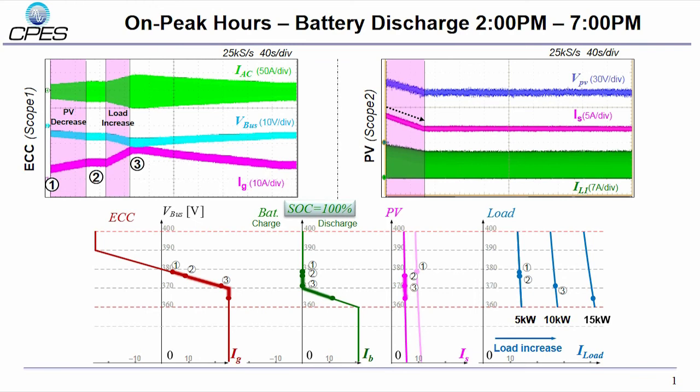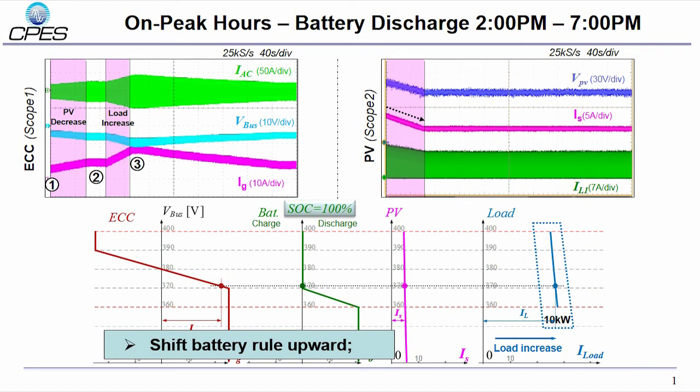If the load is increasing, as you can see here, the ECC will go into the current limiting mode and the bus voltage will be regulated by battery converters. In these conditions, for major heavy load conditions, the load will be majorly contributed by ECC converters. How can we discharge the battery? We can shift the battery's roles upward and the new equilibrium point will be found shown in the solid dot.